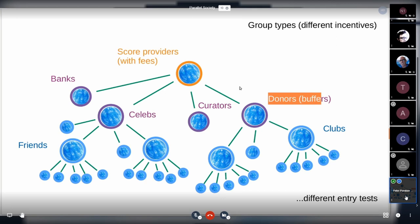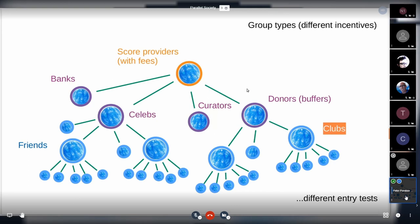That means they promote or they let groups with low income, maybe from some developing countries, they will drag those groups to a more expensive score provider, so they balance developing country groups with the other groups in this hierarchy. These are different incentives for groups. In the same way we can create different entry tests for the groups.